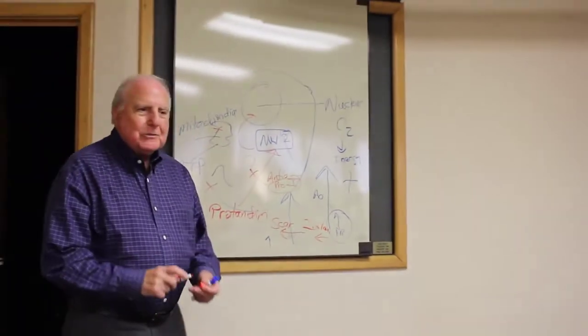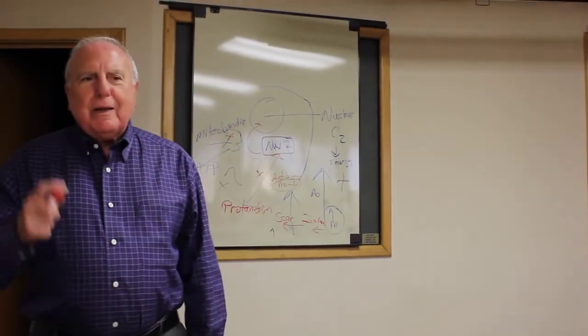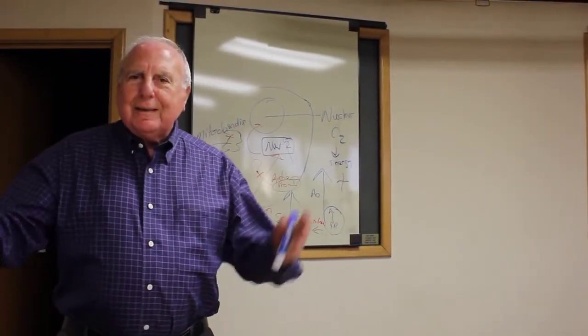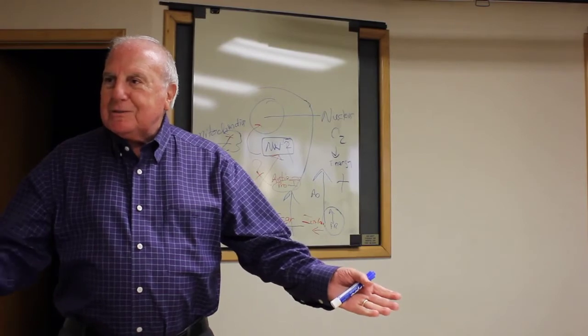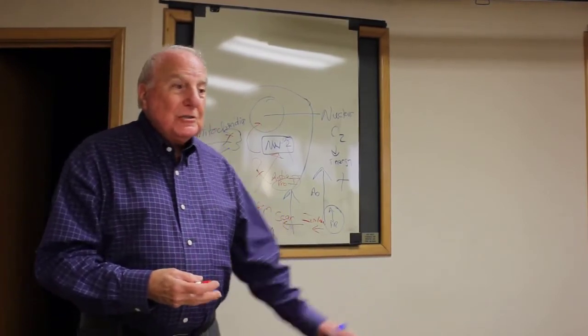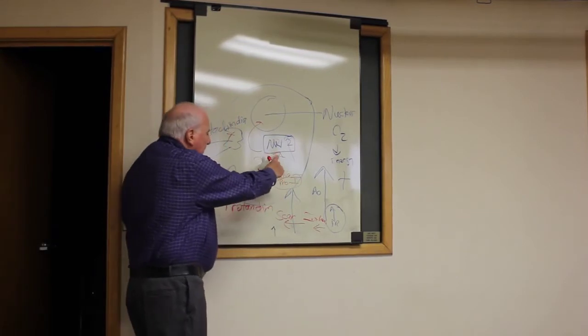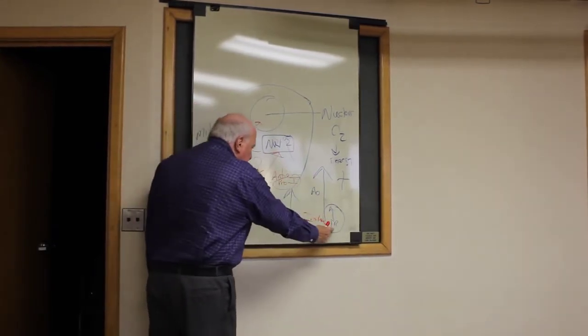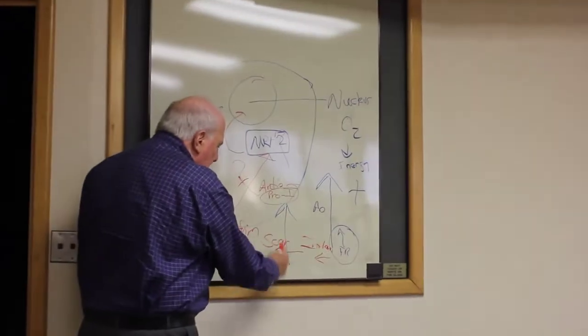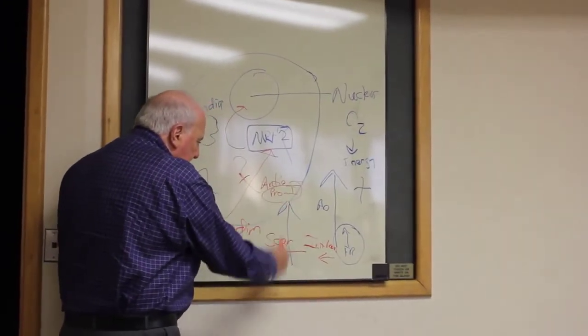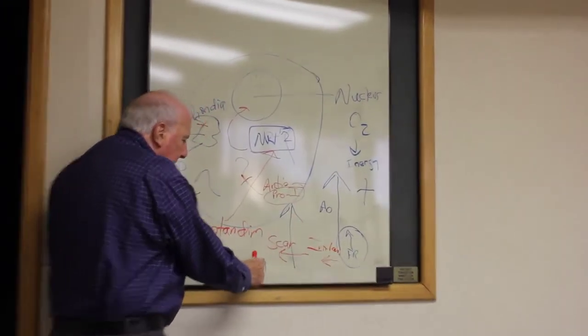So this always ends up in a scar. And there you are. Scars replace cells. Too many scars replace organs. That's disease. This is the beginning of all disease. So this is the beauty of what's been discovered. The mechanism by which we can cut back on this process of getting too many free radicals and too little antioxidants.